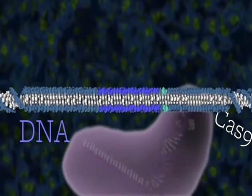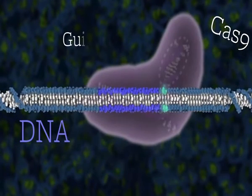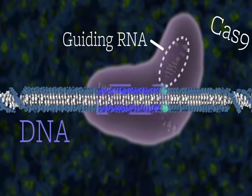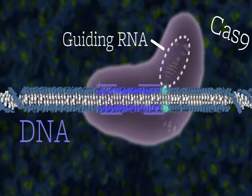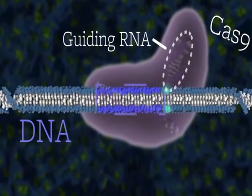For Cas9 to find the malfunctioning DNA, we attach it to an RNA sequence that matches the DNA sequence we want to edit. Then we put this RNA-Cas9 combination into the cell.